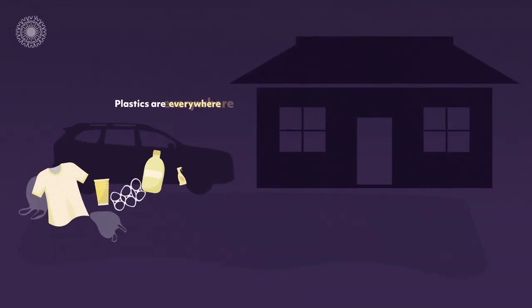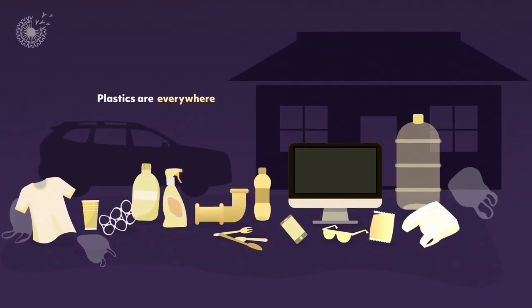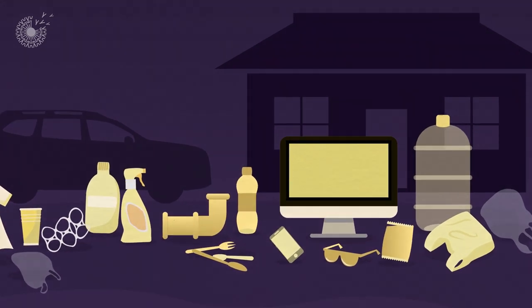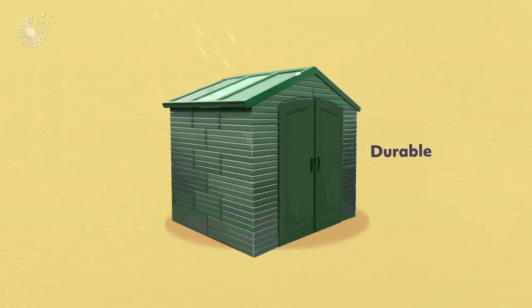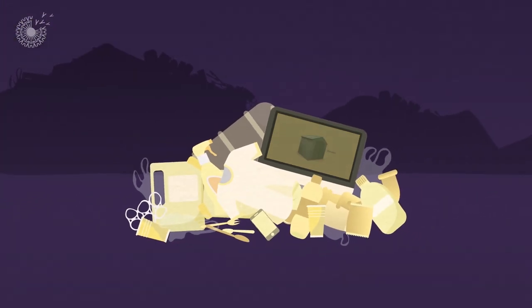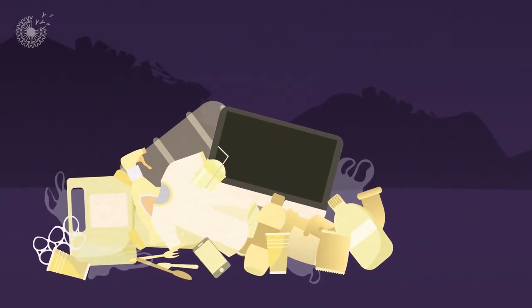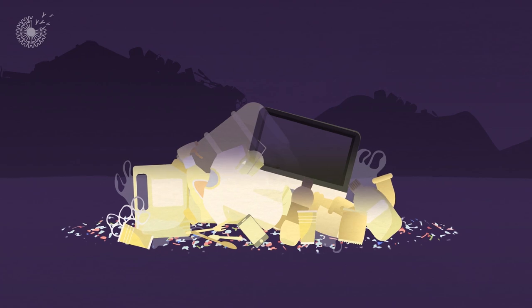Plastics are everywhere. Humans use them to make a wide range of products, specifically because they are so strong, lightweight, and durable. But those same qualities prevent plastics, even compostable ones, from breaking down when they're lost or discarded.